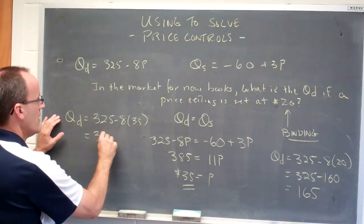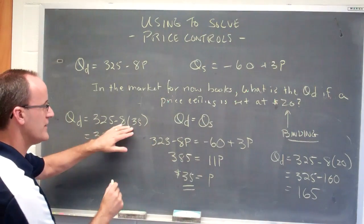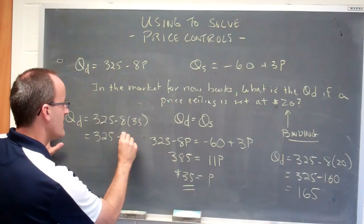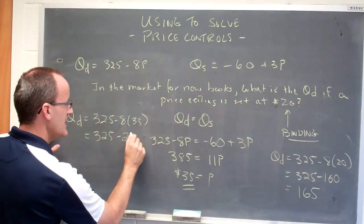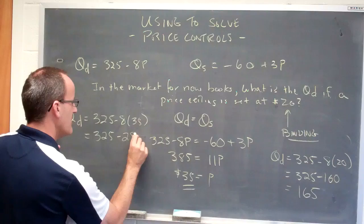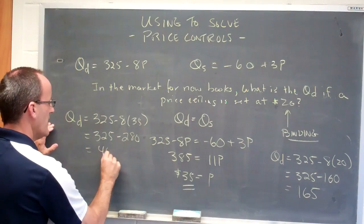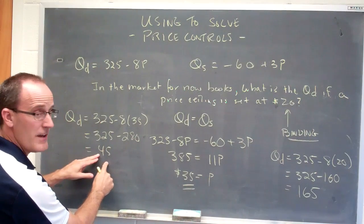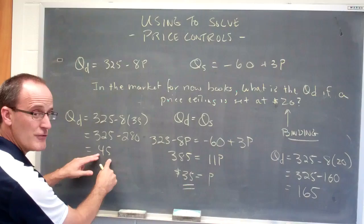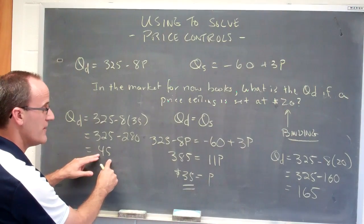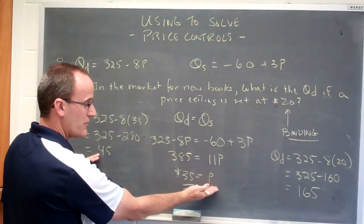Now I get 325 minus 280, which is 45. So if we had a free and open market, consumers would have bought 45 units because the price would have risen to 35.